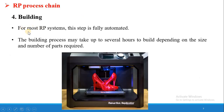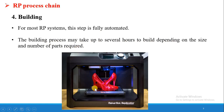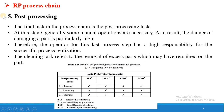The fourth step is building. For most RP systems, this step is fully automated. The building process may take several hours depending on the size and number of parts required — this is the 3D printing machine where the part is manufactured. Depending on the complexity, shape, and size of the object, it may take hours because it uses layer-by-layer additive technology.